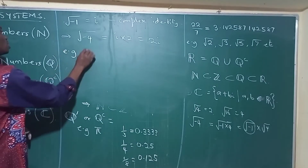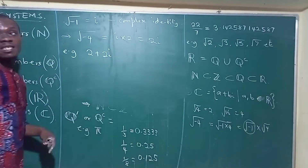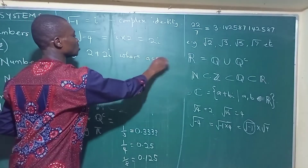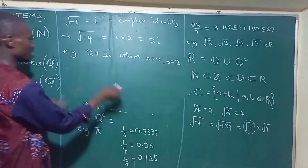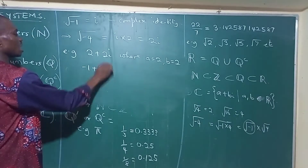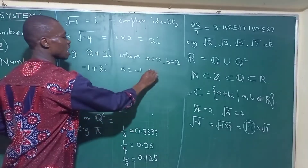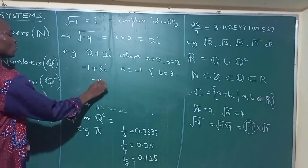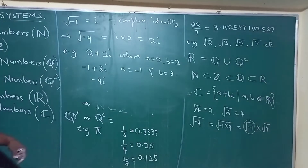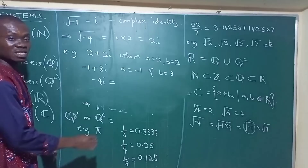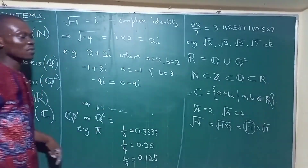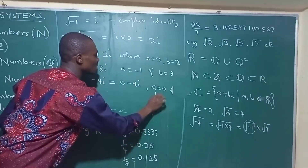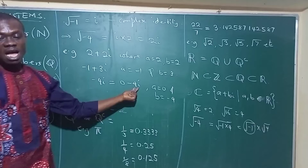For example, 2 plus 2i is a complex number, where a equals 2 and b equals 2. Another example is minus 1 plus 3i, where a equals minus 1 and b equals 3. Now, note that a number like minus 4i is also a complex number — it can be written as 0 minus 4i, putting it in standard form, so here a becomes 0 and b equals minus 4, which is the coefficient of i.